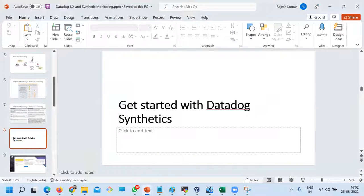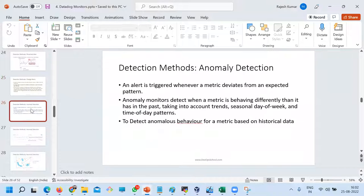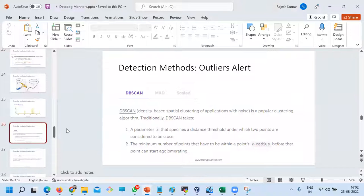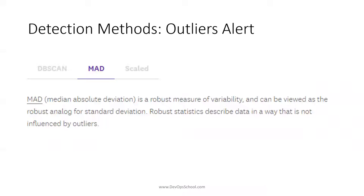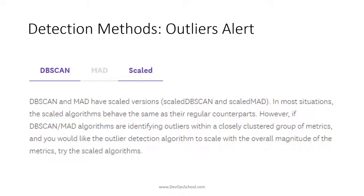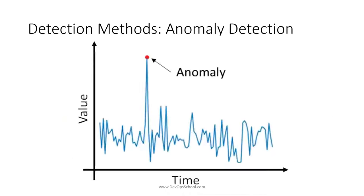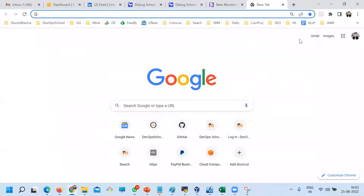Which algorithm was I talking about? There are multiple algorithms — DBSCAN and MAD. These are the algorithms for the outlier detection method. DBSCAN is one algorithm, MAD is another algorithm, and Scaled is another algorithm. These algorithms are built in. If you have a real interest in understanding how they work — how they find outliers, how they find anomalies — you can study these algorithms.